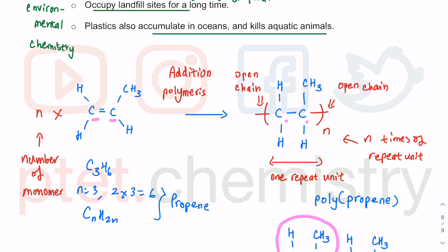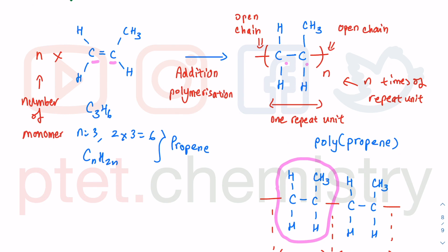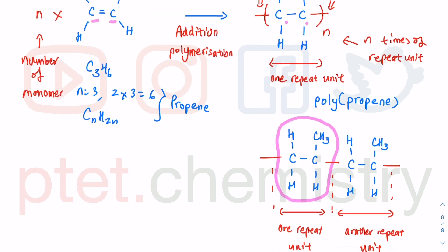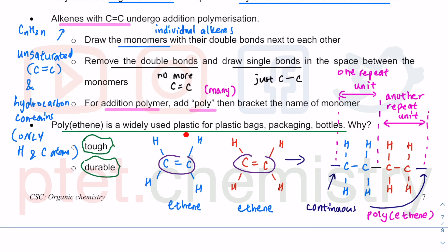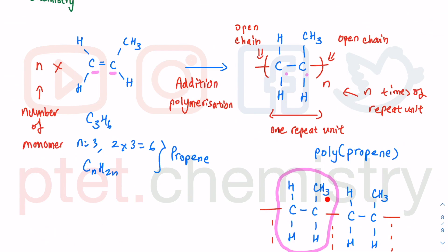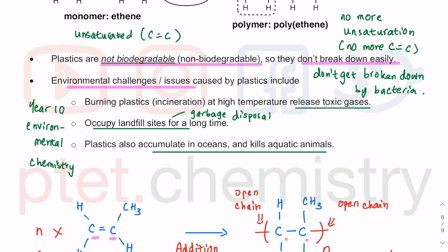This is addition polymerization. You have done addition onto the carbon-carbon double bond to form a polymer, because the monomers add onto each other to give a long chain large molecule consisting of repeating units, but with no more double bond. Addition polymers have useful properties like toughness and durability — polyethene is used in plastic bags, and polypropene is also used to make plastic bags, just different types. The dangers caused by plastics: they are non-biodegradable, they don't decompose. Burning them releases toxic gases; they fill up landfill sites; and they accumulate in oceans, killing aquatic animals and eventually affecting humans through the food chain.